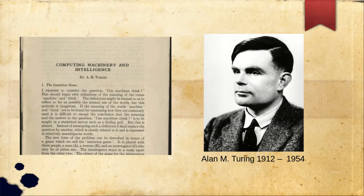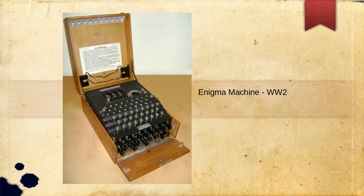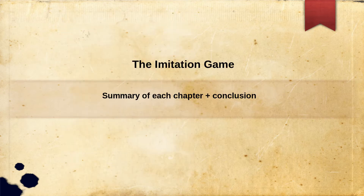Hi everyone! For today's video we're going to be looking at a summary of the 1950 Alan Turing paper called Computing and Machinery Intelligence, or more famously known as The Imitation Game — the same Imitation Game as the 2014 film. Alan Turing was a math genius who helped crack the Enigma machine during World War II. In this video I'll give you a summary of each chapter of his paper and conclude with my thoughts on his work and how it's still so relevant to computing today.